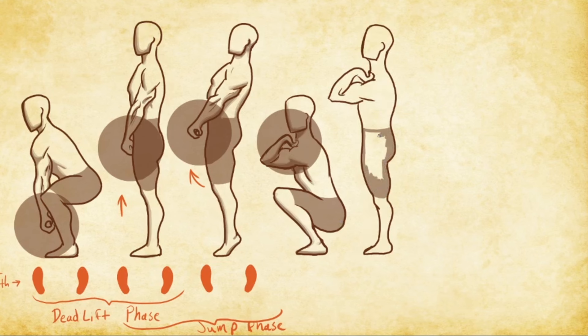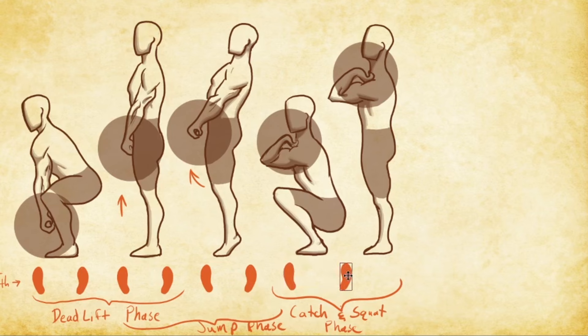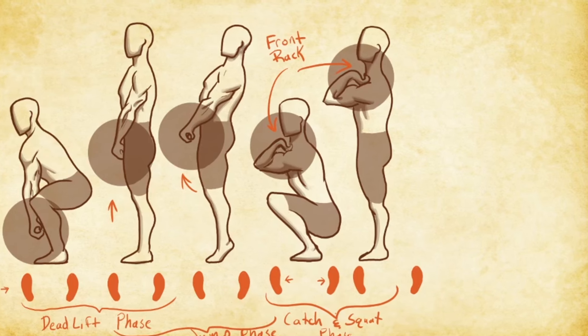From there, the lifter finishes a front squat, bringing the weight all the way up to a standing position while still held on the shoulders. This is where the final phase of the movement takes place, the split jerk.